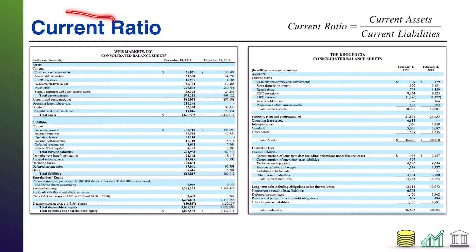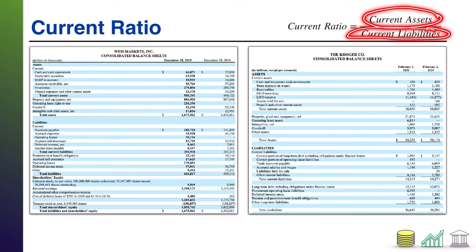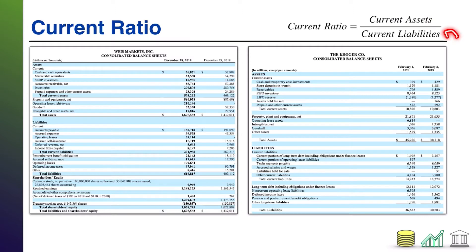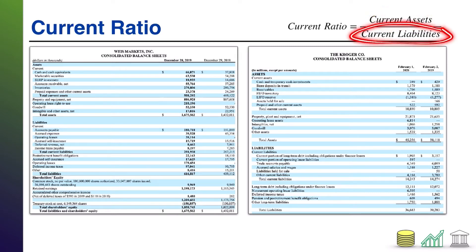The current ratio — the name actually comes from the way it's calculated. Current ratio is the ratio of current assets to current liabilities. In other words, the short-term things you expect to convert to cash within a year, divided by the short-term debts you expect to pay in a year. This is a liquidity ratio because it's telling you how able you are, given your current assets, to pay off those current liabilities over the next year.